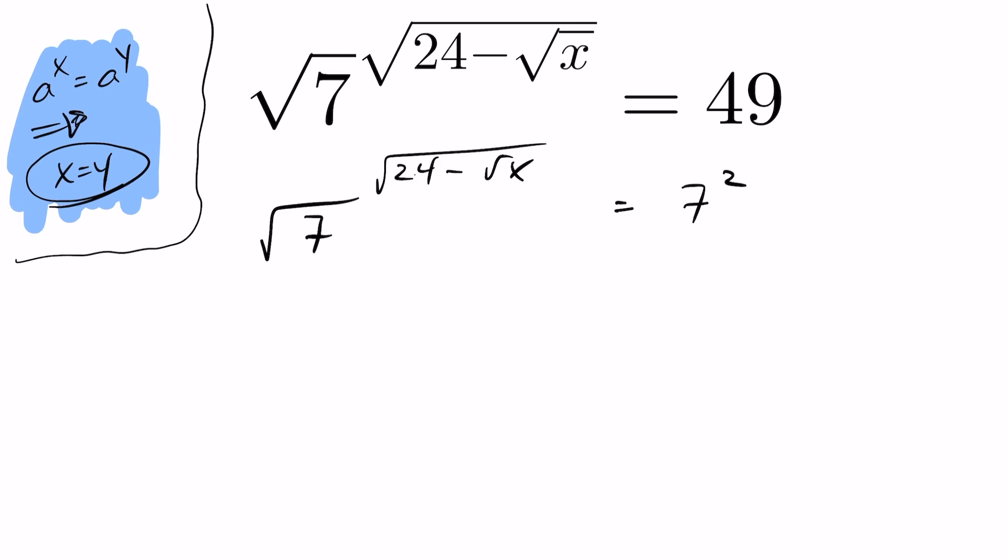I'm going to do the same thing here. I just have to rewrite the square root of 7 in its exponential form. So this will be 7 to the half, and that is all to the exponent of the root of 24 minus root of x. And that equals 7 squared.